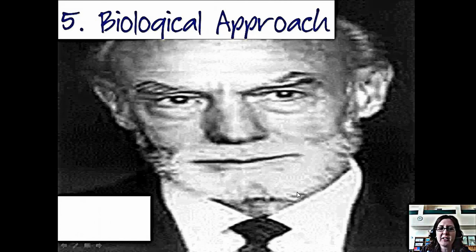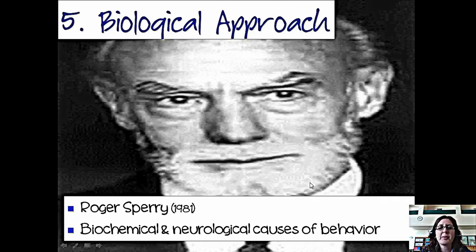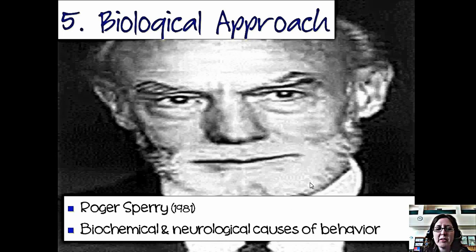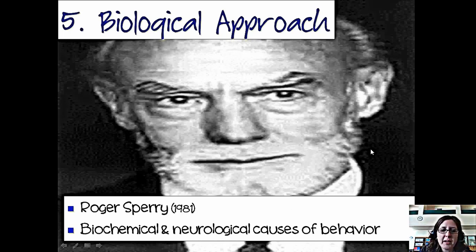The fifth approach is the biological approach. This one is extremely fact-based. Roger Sperry won the Nobel Prize in 1981 for his research on the split brain. He was able to sever the corpus callosum — the band of fibers that separates the two hemispheres of the brain — and isolate them to determine what the left hemisphere and the right hemisphere both do. The belief of the biological approach is that we are controlled by our biochemical and neurological functioning: neurons firing, chemicals being released, and those things cause our behavior.